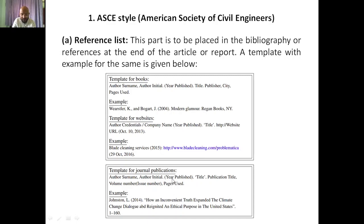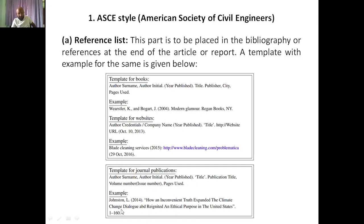For the journal publication template in ASCE: author surname and initials similarly as before, then year published — 2014 — then the title: 'How an Inconvenient Truth Expanded the Climate Change Dialogue and Reignited an Ethical Purpose in the United States.' Next, the volume number in brackets, then the issue number in brackets — for example, volume 10, issue 5. Then pages used — for example, 100 to 160 pages. That is how the ASCE journal citation works.